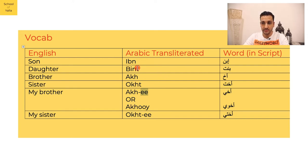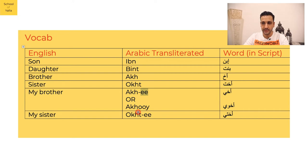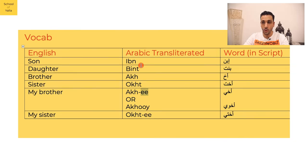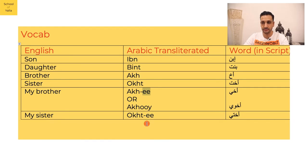So if I want to say 'the son of my brother,' I say 'ibn akhi' or 'ibn akhuy.' Similarly, 'bint ukhti' means 'the daughter of my sister,' and 'ibn ukhti' means 'the son of my sister.' These phrases are how you express nephew and niece in Arabic.